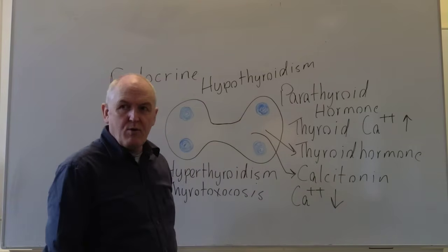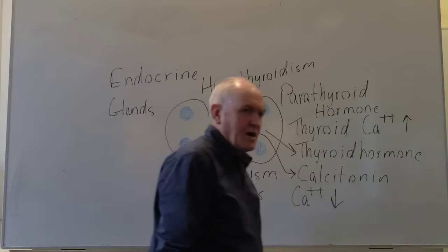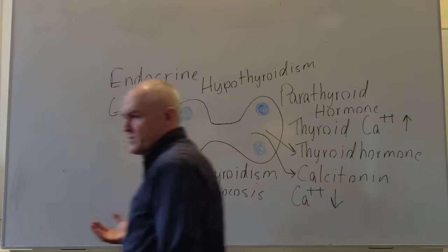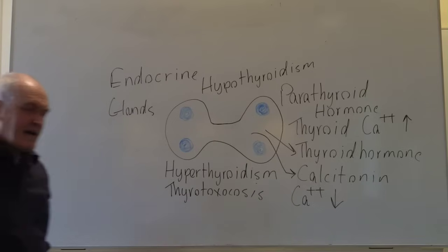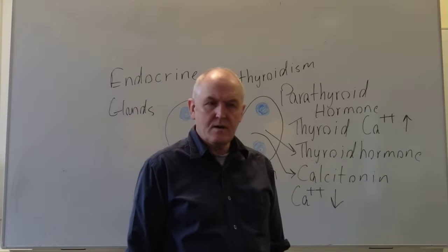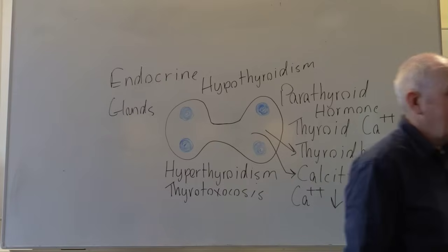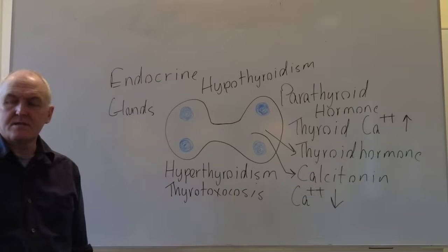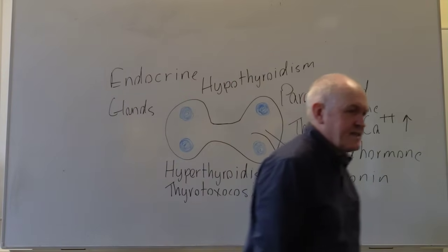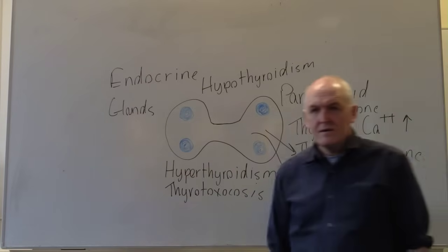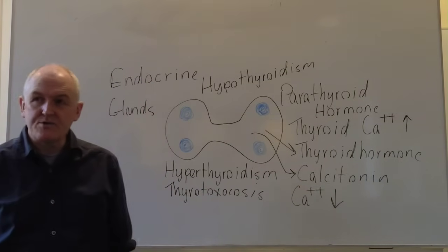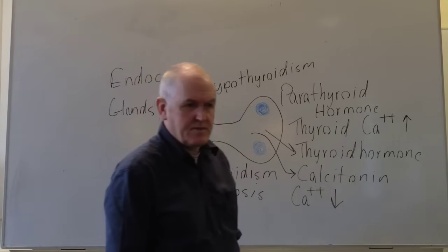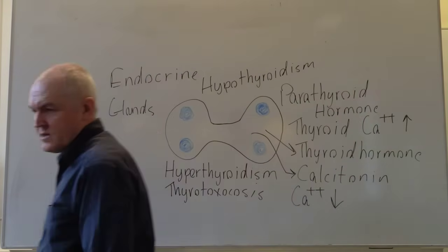Thyroid hormone is also remarkably important when you're a fetus and a child for normal growth and development, particularly growth of the brain. If someone doesn't have enough thyroid hormone when they're a fetus or child, they'll get what we now call paediatric hypothyroidism. In the old days this was called cretinism — a cretin is mentally and physically immature. Once the brain fails to mature, you can give thyroid hormone afterwards but they won't catch up; they'll often have profound learning difficulties for the rest of their lives.